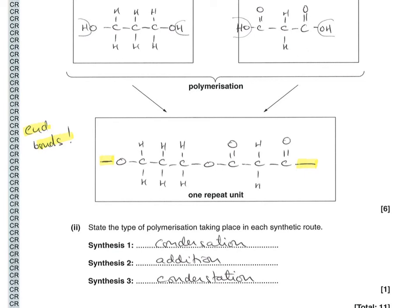As I was saying before, the question finishes by asking what type of polymerization is taking place in each of the three syntheses. So one is condensation, two was addition, and three, the one on the screen now, is condensation again.